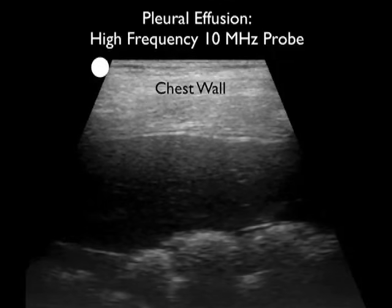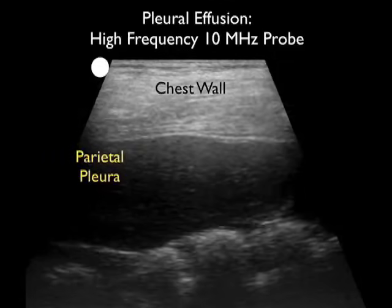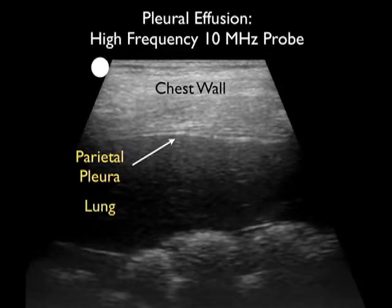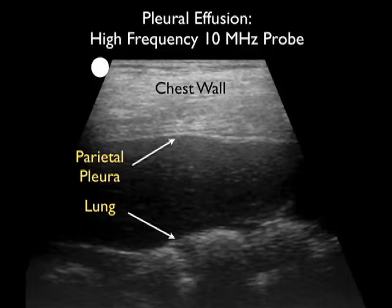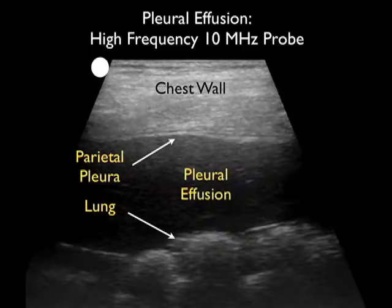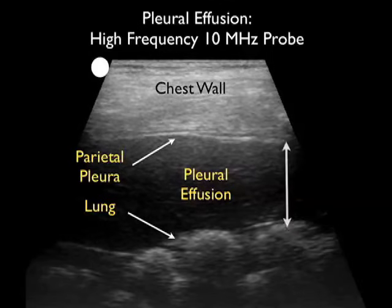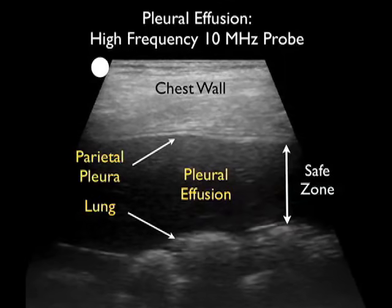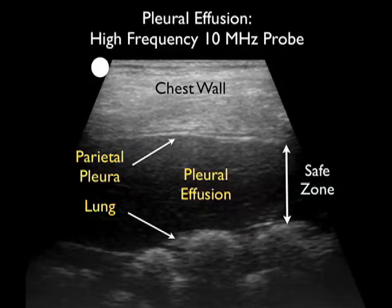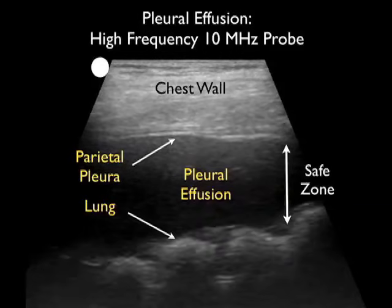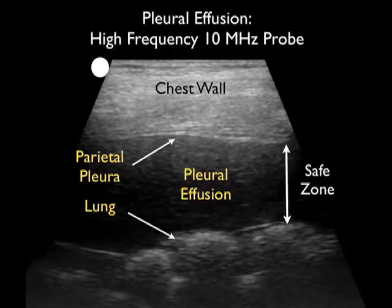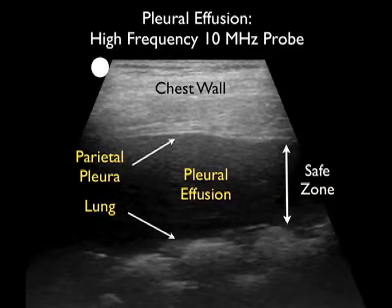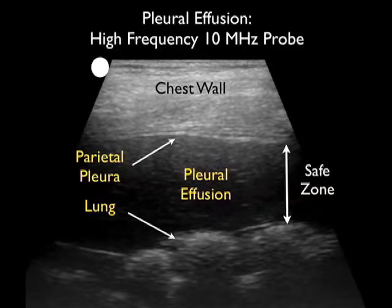This ultrasound image is again taken with a high frequency 10 megahertz probe, but in this orientation the probe is configured between the ribs in the lateral orientation, so all we see is the chest wall anteriorly. We see the parietal pleura — that white line deep to the chest wall — and just deep to the parietal pleura we can see the pleural effusion as made up by the darker anechoic collection of fluid. We also see the lungs sliding back and forth as the patient breathes, and we can see the full extent of the pleural effusion, which is the safety zone for performance of the thoracentesis procedure.